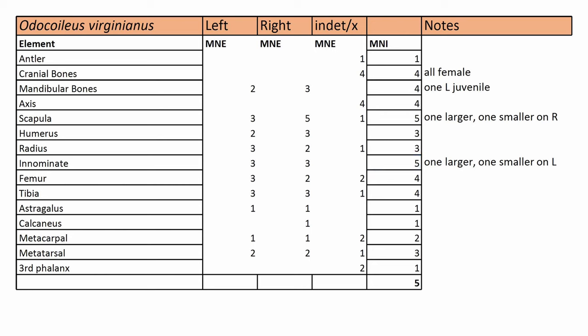And in the rest of the MNI column, there are no estimates higher than five. So five is our MNI estimate for this sample, for this assemblage. In reality, there probably were more individuals represented in that assemblage, but we know that there were no fewer than five in this calculation.